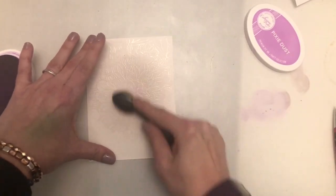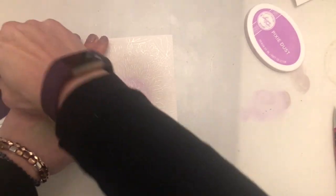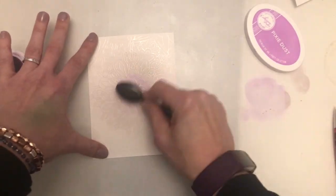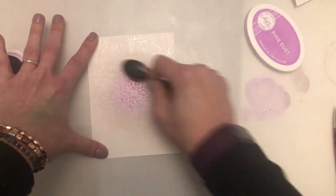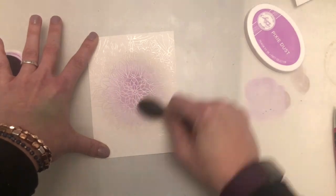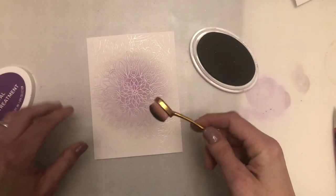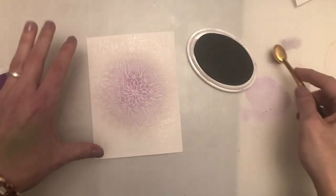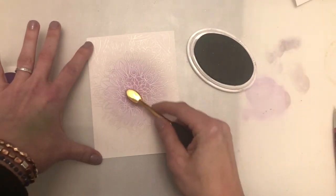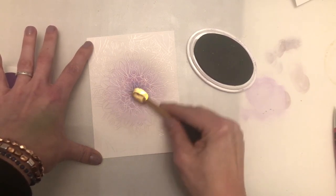And then as a final color I'm using Royal Treatment. Now this is quite an intense dark purple so I'm using a much smaller brush here because I'm only intending to do the very center of the embossed image. As you'll see when you go over it with the ink, the embossing powder resists the ink and what you can do is just lightly buff it with a cloth and it will take off any of the ink that's still sitting on the surface of the embossing powder.